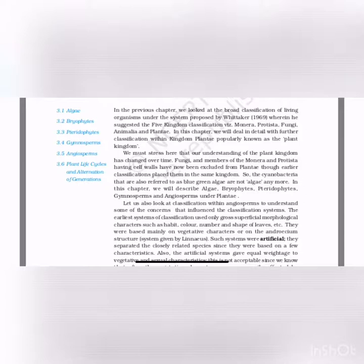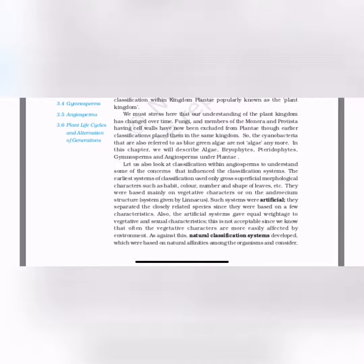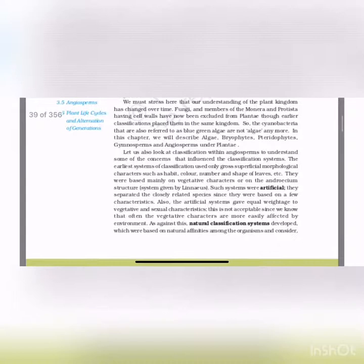Our understanding of the plant kingdom has changed over time. Fungi and other members of Monera and Protista that have cell walls have now been excluded from Plantae — previously they were included. In the Whittaker five-kingdom system, though earlier classifications placed them in the same kingdom, it was later considered that the cell wall is made up of different types of material. In the plant kingdom it is made up of cellulose, so cyanobacteria referred to as blue-green algae are not algae anymore. In this chapter we will describe algae, bryophytes, pteridophytes, gymnosperms and angiosperms under Plantae.